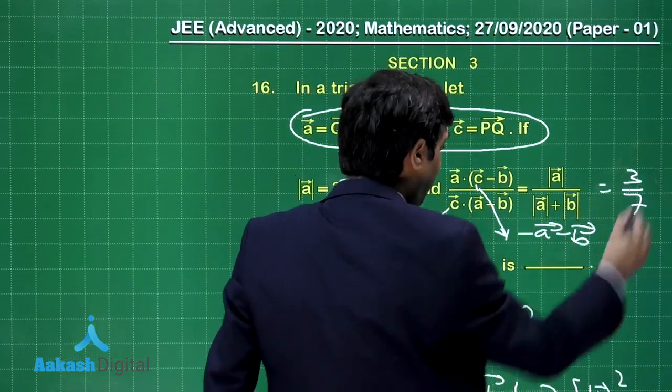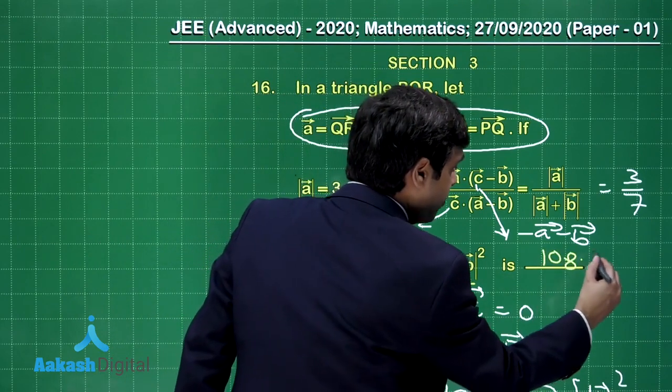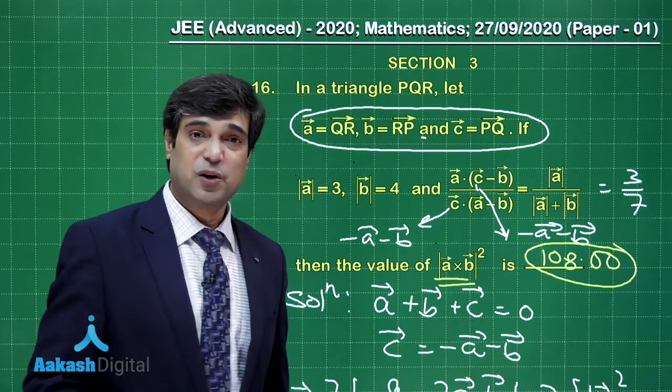So I am sure this part is clear. Now let us move on to the question part. It is being asked what is the value for this one? So yes, this is 108.00. I am sure this part is clear. Let us move on to the next one now.